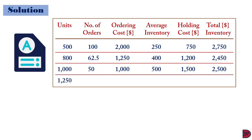And lastly, 1,250 units per order. This will lead to a number of orders per annum of 40 — that is 50,000 divided by 1,250. The ordering cost of $20 times 40, giving $800. Average inventory of 1,250 divided by 2, giving 625. Holding cost will be 625 times $3, giving $1,875. Total inventory will now be $2,675 for that order quantity.